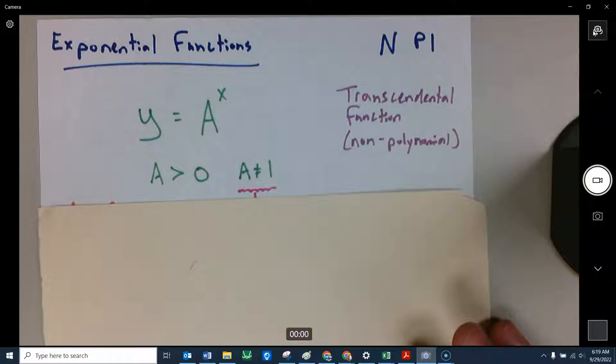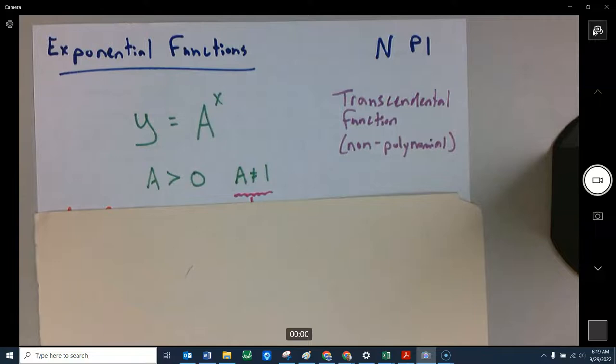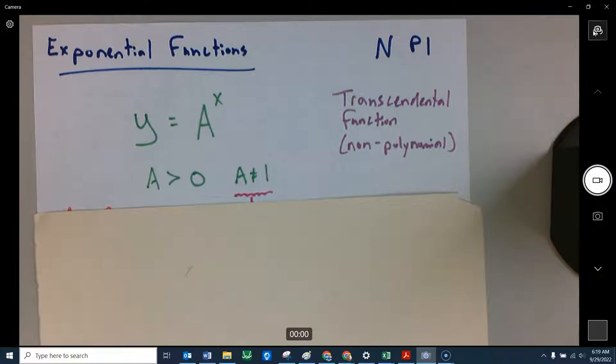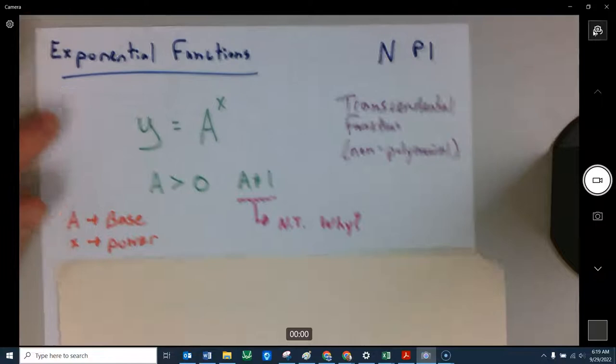Why wouldn't one work? Like we're talking exponential growth. If one was the base, we'd have one to the first power, one to the second power, one to the third power. And that would just be a constant. That would always be one. So it can't be one. Anything positive, we're talking exponential function. That A we'll call our base. We raise it to the exponent or we raise it to the power. So just some vocab words for us there.